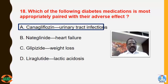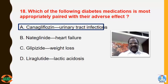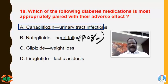Option B: nateglinide is a non-sulfonylurea causing insulin secretion — its side effect is hypoglycemia. Heart failure is the adverse effect of pioglitazone on chronic therapy. Option C: glipizide is a sulfonylurea — an insulin secretagogue — whose common adverse effects are hypoglycemia and weight gain, not weight loss. Option D: liraglutide is a GLP-1 analog causing weight loss, approved for treatment of obesity — it does not cause lactic acidosis.